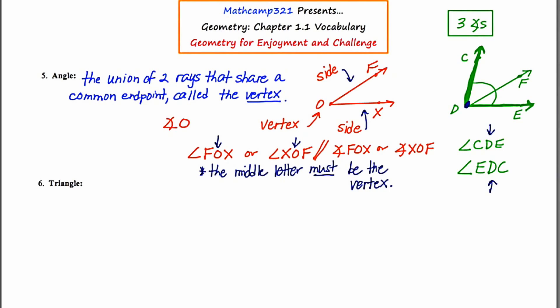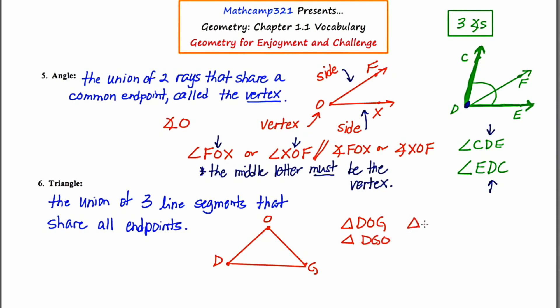Our last term is triangle. A triangle is the union of three segments that all share endpoints. So I'm going to draw a picture of a triangle, and I'm going to put some points here to represent the endpoints of each of these segments, and I'm going to call this triangle dog, D-O-G. Now, when you're identifying a triangle, you use a little mini triangle symbol, and then you just write down the letters in any order. So I could say triangle D-O-G, I could say triangle D-G-O, I could say triangle O-D-G, I could say triangle O-G-D, I could say triangle G-O-D, or I could say triangle G-D-O. So there are six ways that I could scramble these letters to appropriately name this triangle.